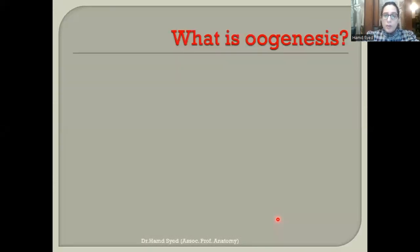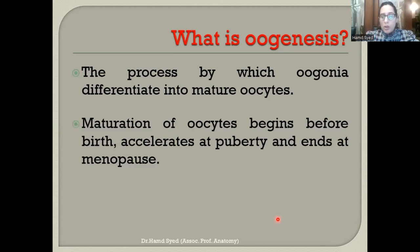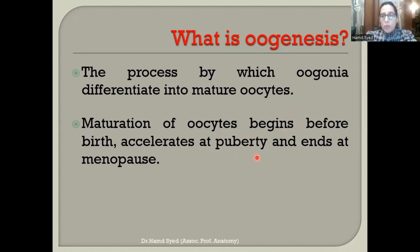Oogenesis is the process by which oogonia differentiate into mature oocytes. Maturation of these oocytes begins before birth, accelerates at puberty, and ends at menopause. In contrast to spermatogenesis — which is initiated at puberty — oogenesis starts before birth, halts during childhood, and then restarts at puberty. This is the key difference between oogenesis and spermatogenesis.